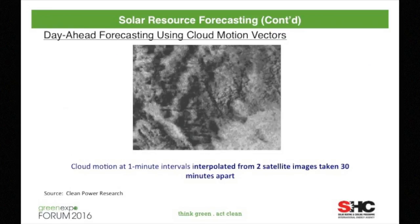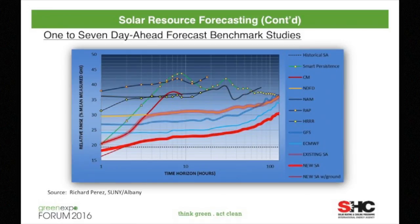This conceptualizes a cloud motion vector. You have typically from a satellite a scan of the Earth's surface every 15 or maybe 30 minutes. What you can do with a cloud motion vector is interpolate between the 15 or 30-minute images and produce one-minute values of estimated cloud cover minute by minute between that period of time. That's basically the fundamental principle behind cloud motion vectors.